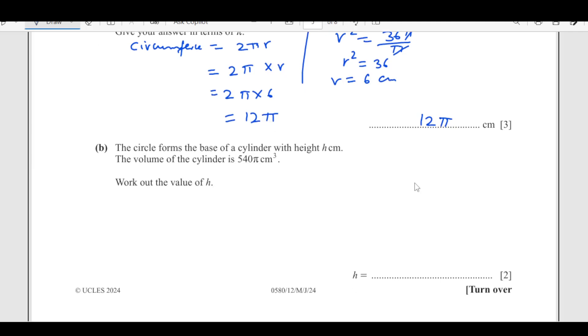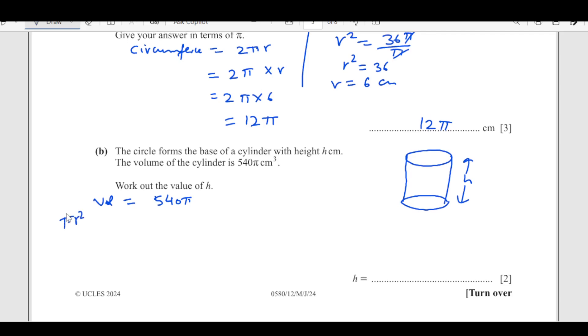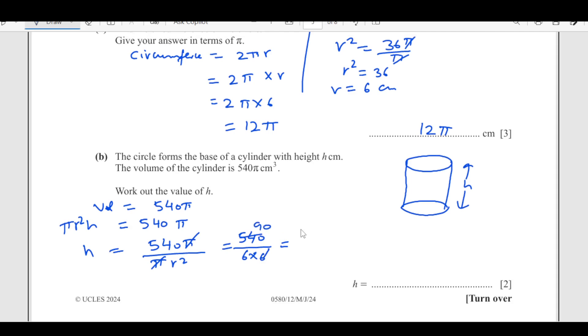The circle forms the base of a cylinder with height h. The volume of the cylinder is 540π. Formula of volume is πr²h, which is 540π. We are looking for h. h will be 540π over πr². π is cancelled. 540 over r², r is 6, so 6 times 6 is 36. When you simplify, 540 over 36, 6 times 9 is 54, 54 over 6 is 9. Wait, 540 divided by 36 is 15. So height is going to be 15 centimeters.